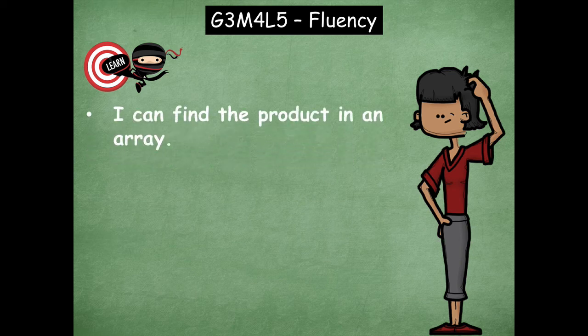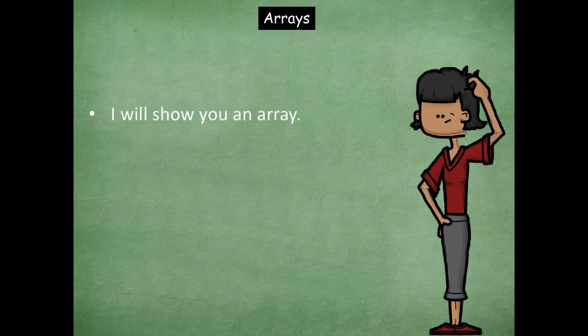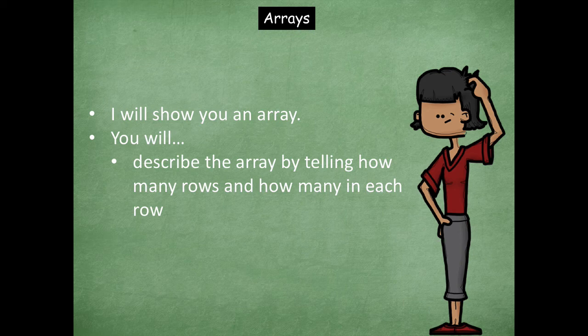So our learning goals are: I can find the product in an array, and I can skip count by threes, sixes, sevens, and nines. So let's jump in and get started with arrays. I'm going to show you an array and you will describe the array by saying how many rows and how many are in each row, and then you'll find the product of the array.